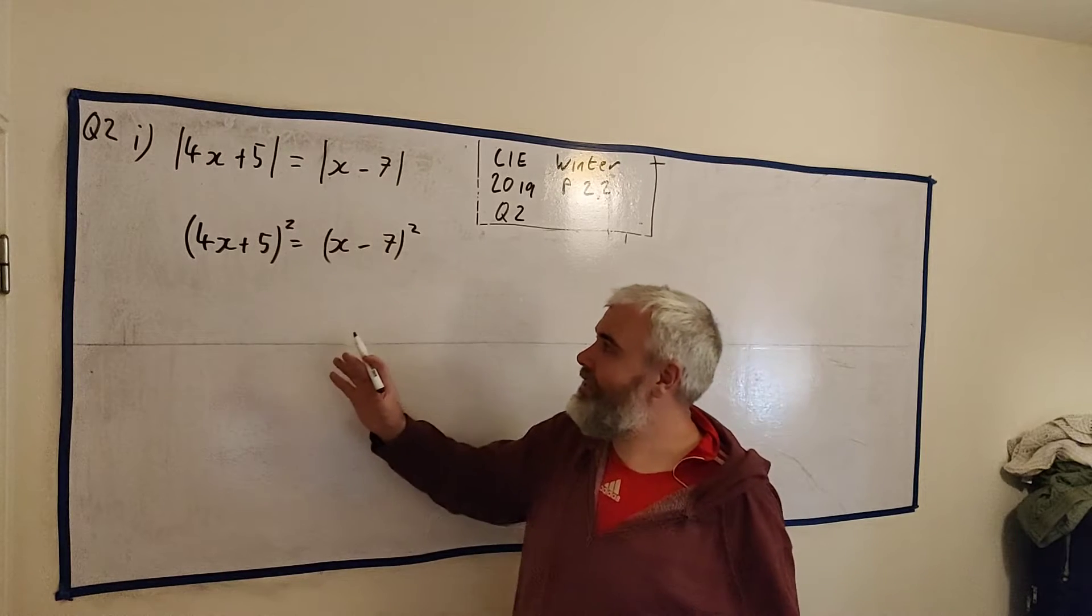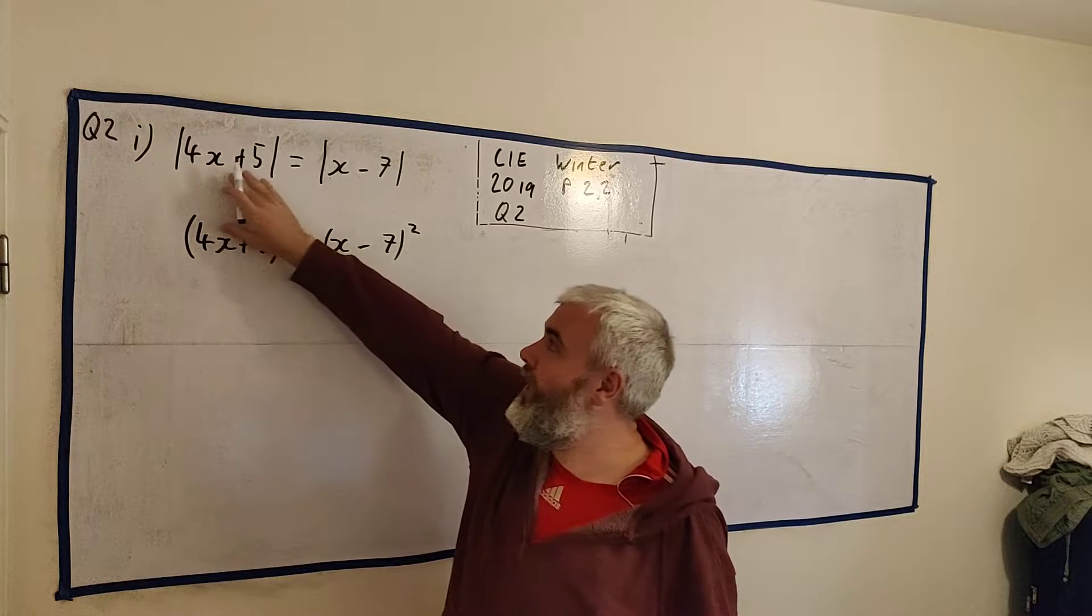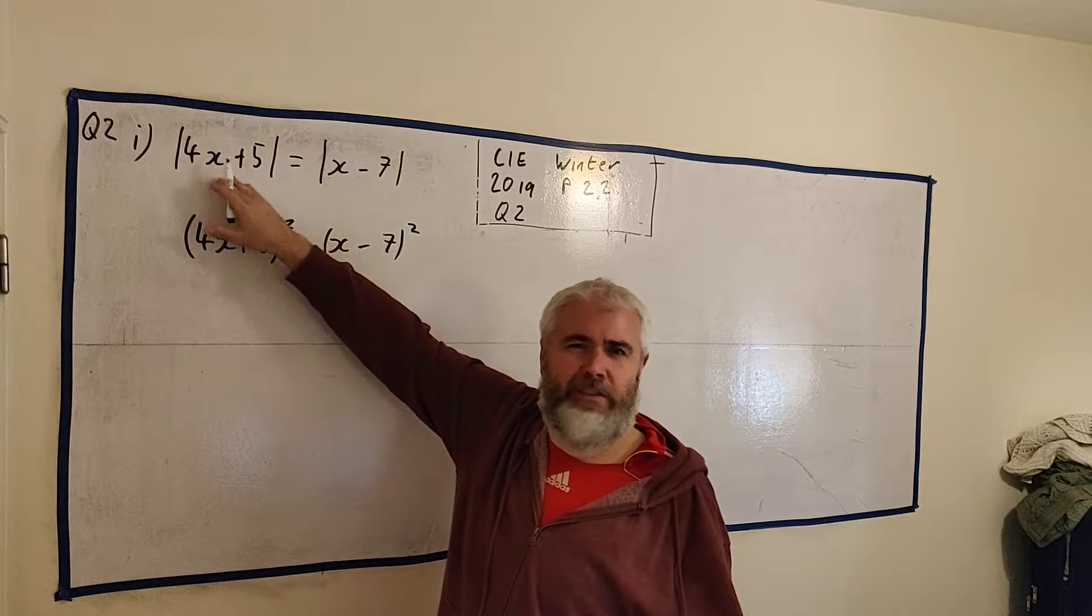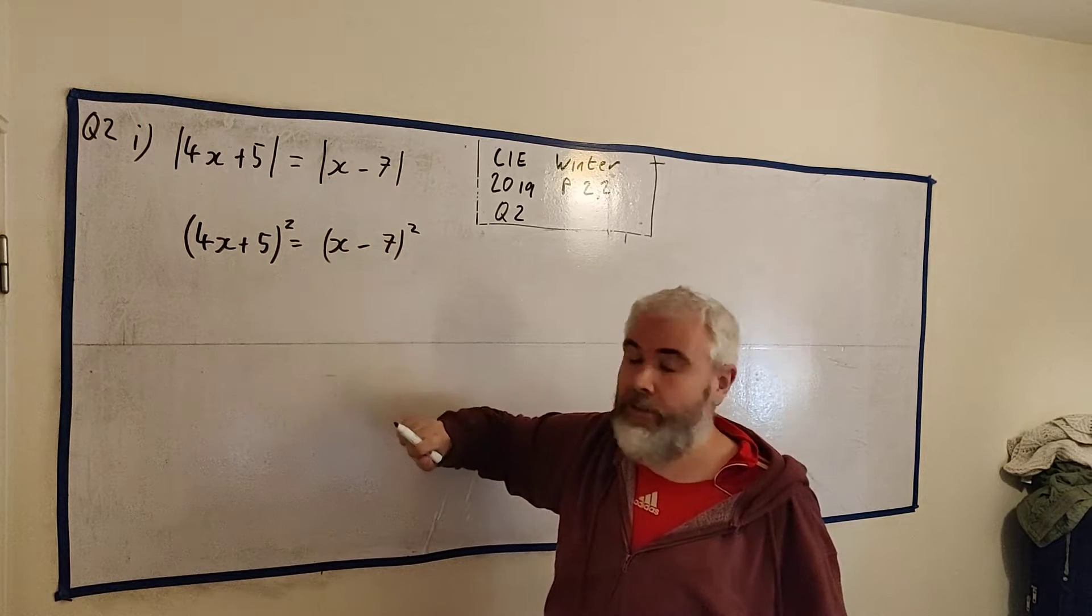Now, in this case, this will equal this squared. This is true. Because, let's imagine these were two positive numbers, 2 and 2. Well, 2 squared equals 2 squared.